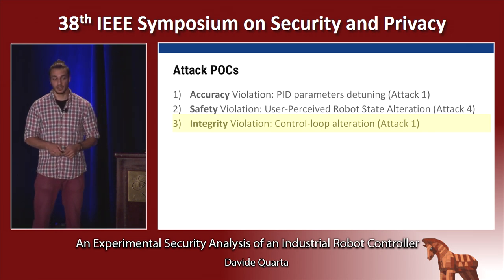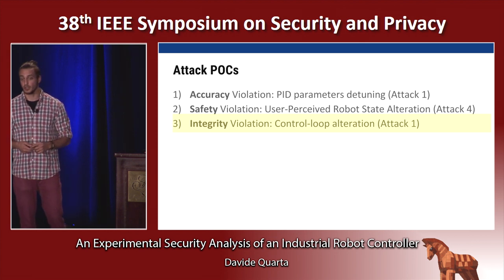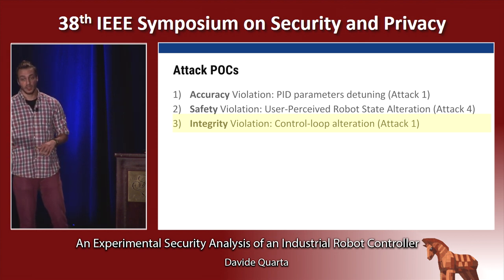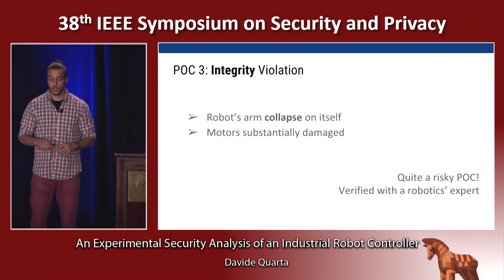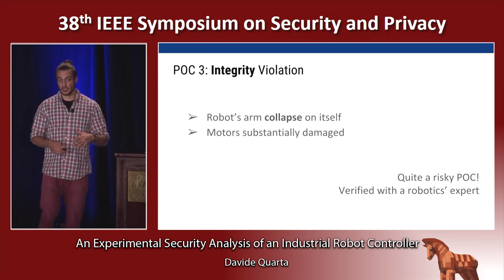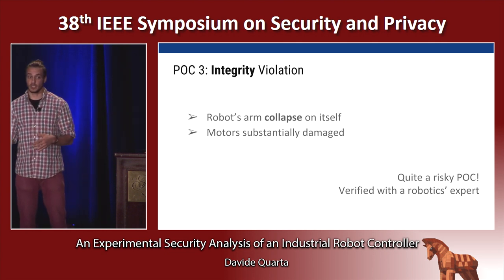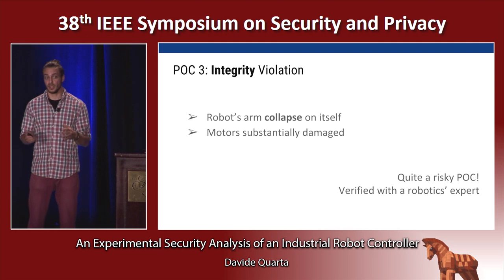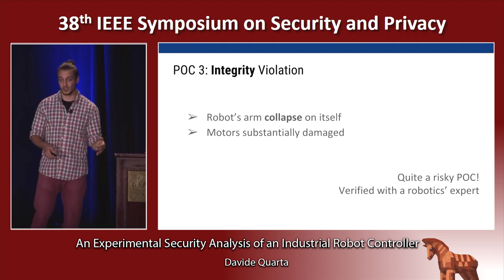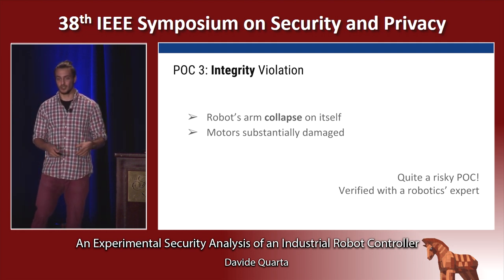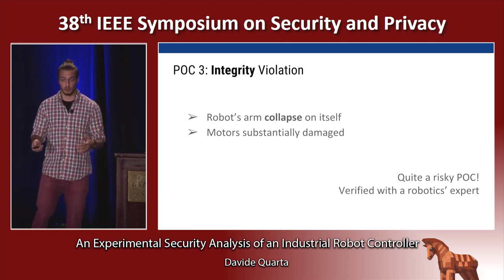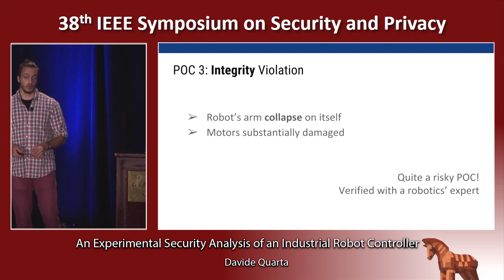The last attack implemented is the integrity violation, in which we modified control loop parameters to make the robot arm collapse on itself and substantially damage the motors. This is quite a risky proof of concept — we were not allowed to test it on the actual robot, not only because it costs $20,000 used or $80,000 new, but also due to safety regulations. However, we verified with a robotics expert that the outcome should be as theorized.